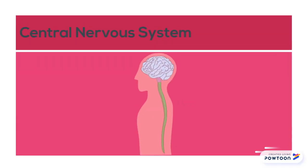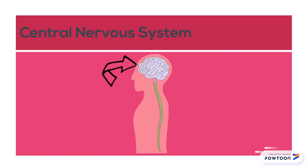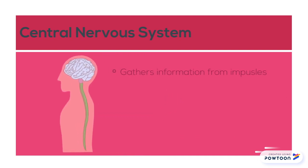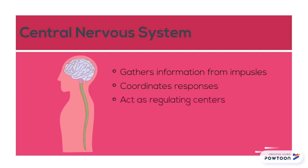The central nervous system contains the spinal cord and the brain, otherwise referred to as the CNS. This system gathers information from nerve impulses that are transmitted from every nerve in the body and coordinates the body's responses. In homeostasis, these two components are the regulating centers of the body.